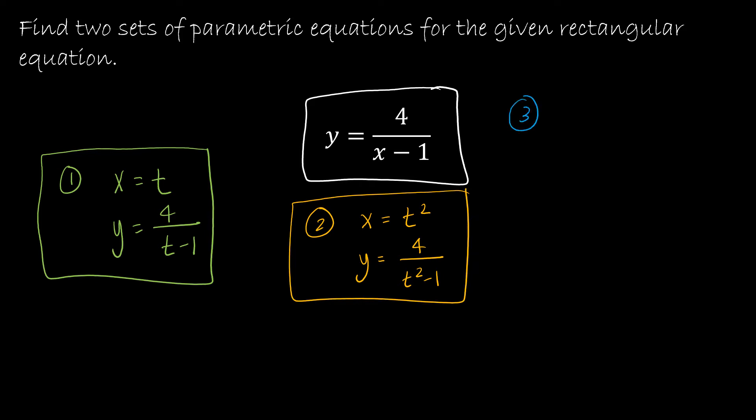What if I let x equal t plus 1? Then y would have to be equal to 4 divided by t plus 1 minus 1, which would mean y is equal to 4 divided by t. And that is another correct solution. So again, it's all about that relationship set by the rectangular equation.